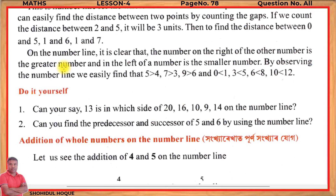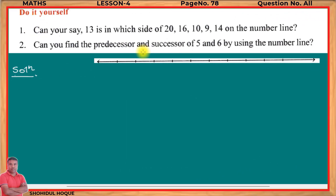This completes the 'Try This' section questions 1 to 5. Now for the 'Do It Yourself' section: Question 1 asks — can you say where 13 is positioned relative to 20, 16, 10, 9, and 14 on the number line? I will draw the number line to solve this.